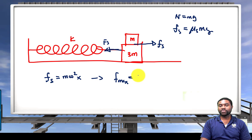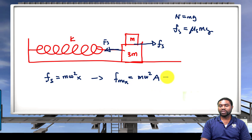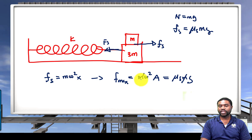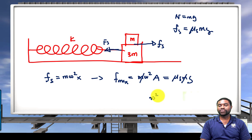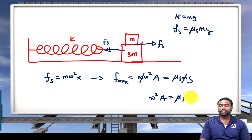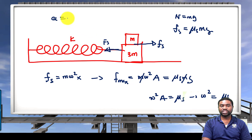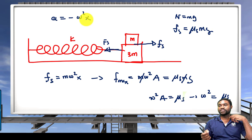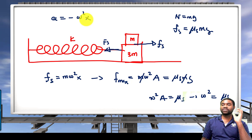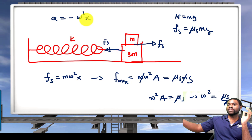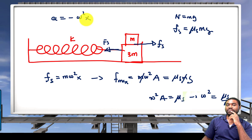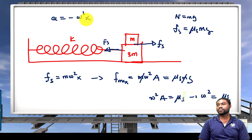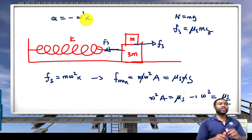The static friction provides the restoring force on the top block: f_s equals M·ω²·x. At maximum, f_max equals M·ω²·A equals μ_s·M·g, so ω²·A equals μ_s·g, which implies ω² equals μ_s·g/A. Recall that acceleration equals negative ω²·x, so the acceleration is maximum at amplitude A, where velocity is zero. ω is simply 2π/T, a constant. We'll pick up from here next class.